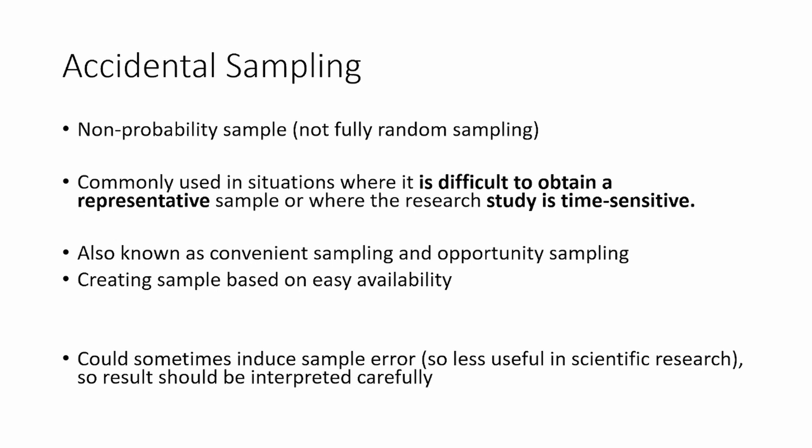So what is accidental sampling? We discussed random sampling — randomly picking observations — but it is not always possible to randomly pick observations. In some situations, picking a sample randomly, or doing probability sampling, is not possible. That's when you use accidental sampling. It's also known as non-probability sampling, because it's not fully random sampling. This is commonly used in situations where it's difficult to obtain a representative sample for the population.